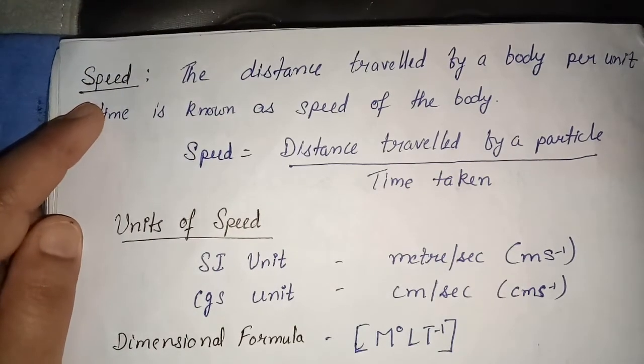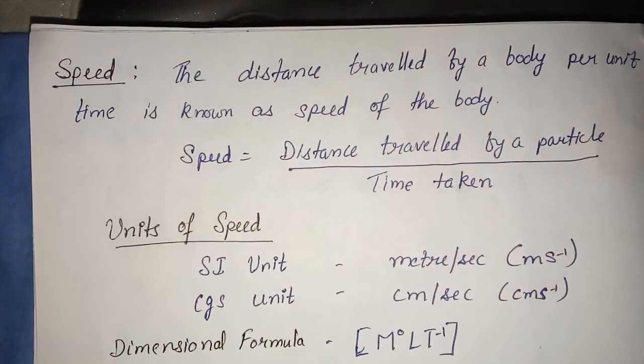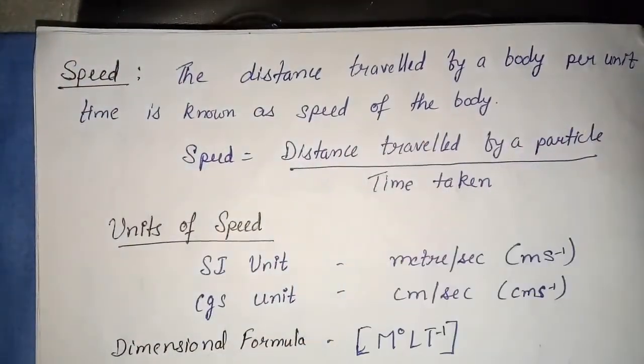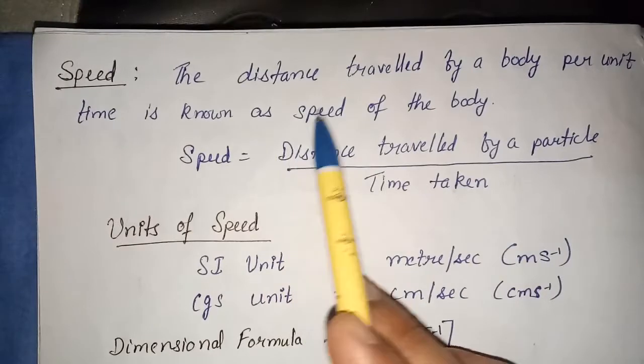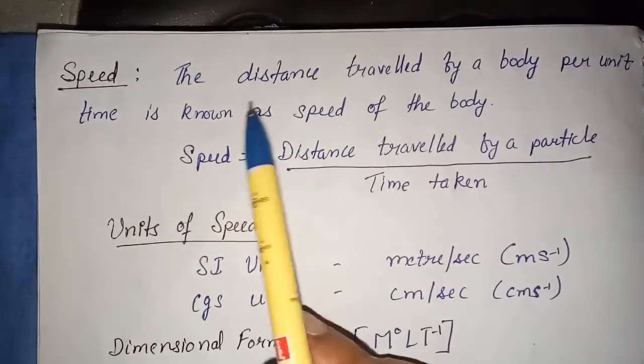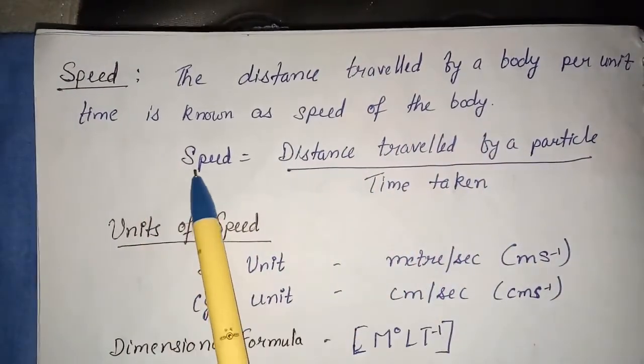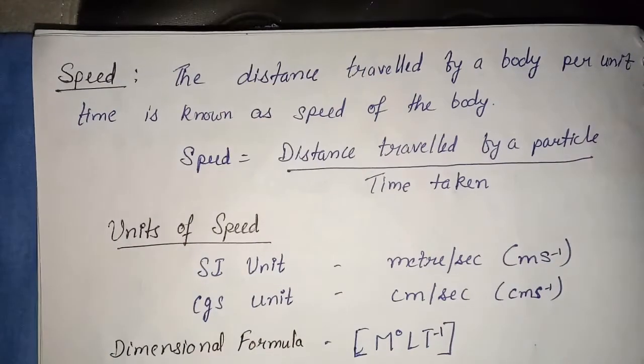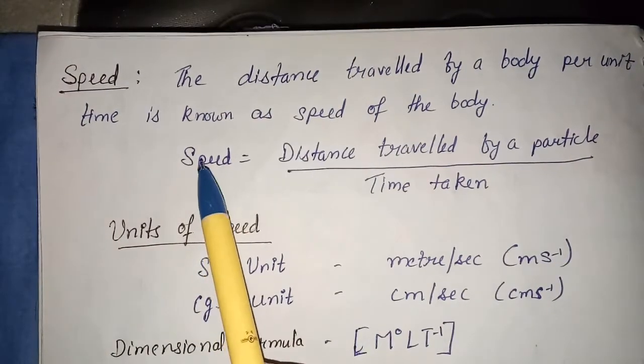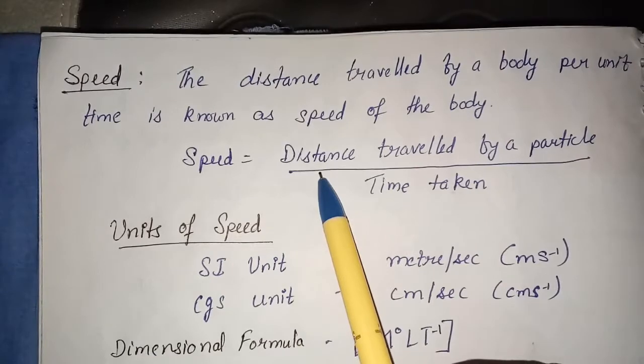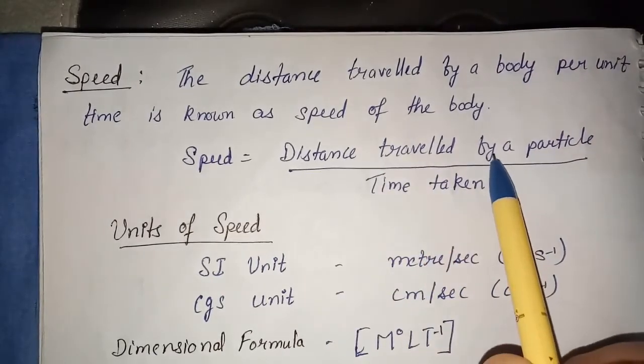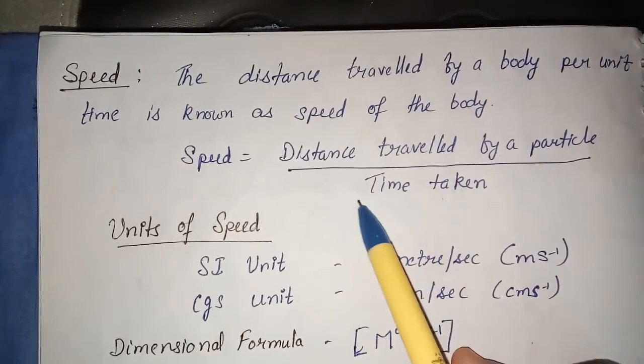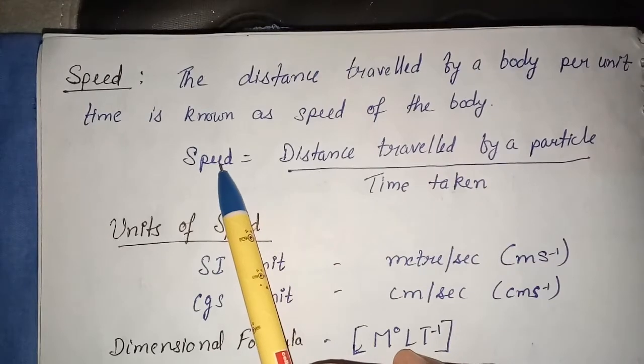First, speed. Speed is the distance travelled by a body per unit time. In a unit time, how much distance is travelled by a body? If we translate it in Hindi, how fast is a body going? How will you find out the speed? We will find out how much distance is travelled by a body per unit time. This ratio will tell us the speed.